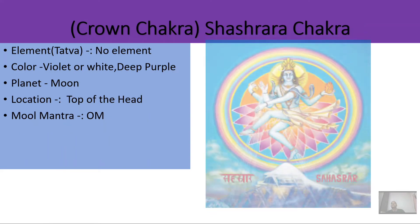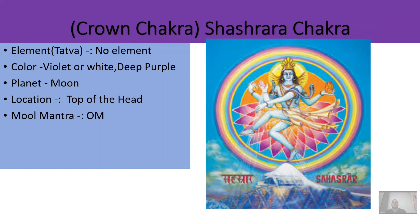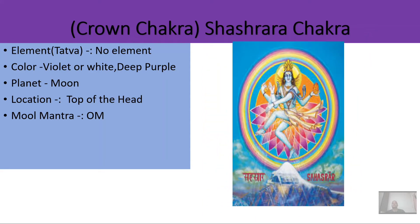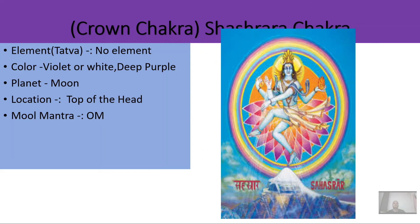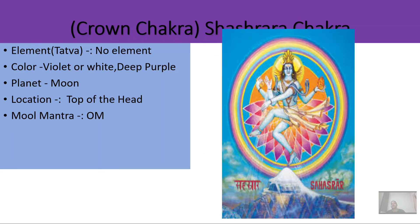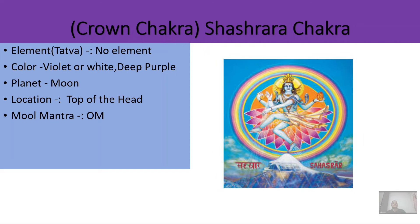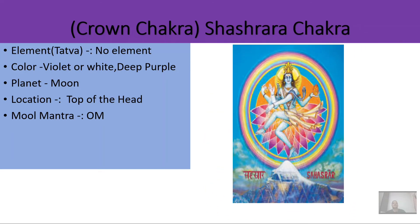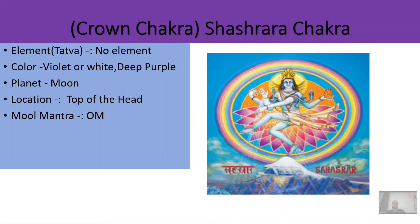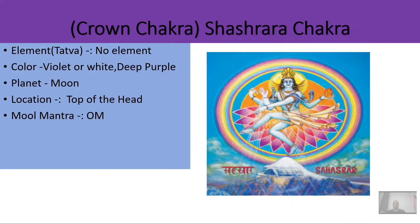The seventh chakra is the crown chakra, or Sahasrara chakra. It is located at the top of the head — where you normally wear a crown. It is called Sahasrara because it has a thousand petals. No element is associated with this chakra. The color is violet, white, or deep purple, and the mula mantra is 'Om' or 'Aum.'